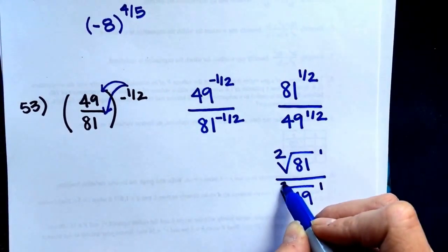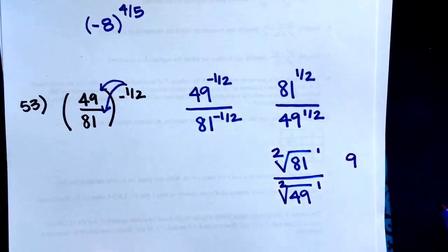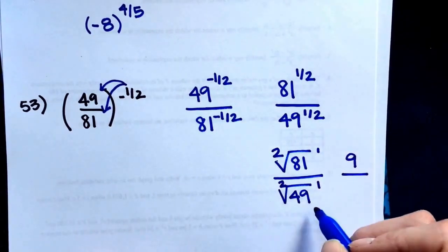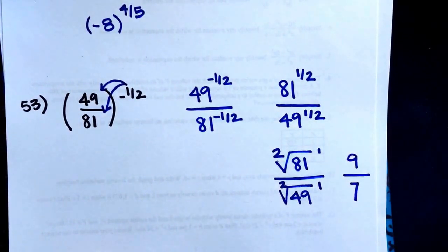Square root of 81 is 9. Square root of 49 is 7. And 9 over 7 cannot be reduced any further.